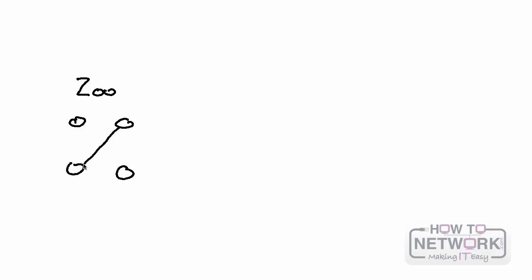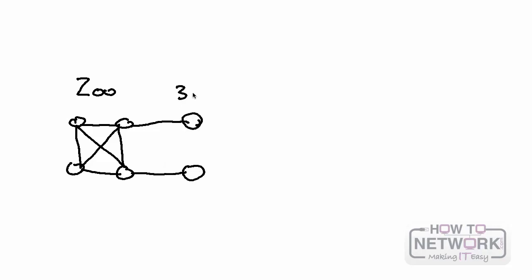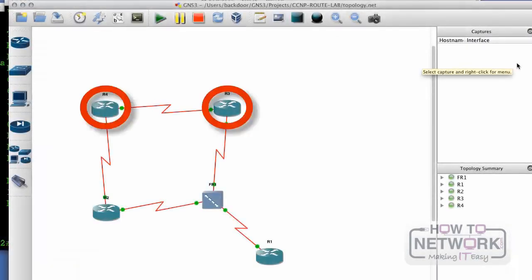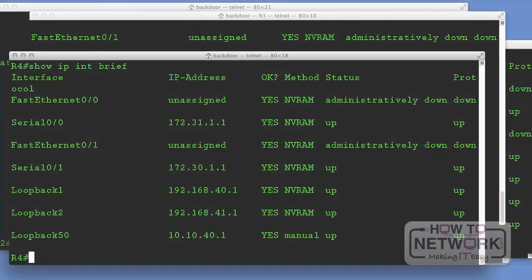Let's do a quick review of eBGP versus iBGP. Say we have autonomous system 200 with four routers connected via BGP. Since they're all in the same AS, we need a full mesh — that's a rule within iBGP. These are all iBGP connections. But if we have two different internet service providers — AS 301 and AS 450 — those connections are eBGP connections because we're connecting to autonomous systems that are not our own. In AS 200 we have full administrative control; eBGP connects us to upstream providers where we do not.